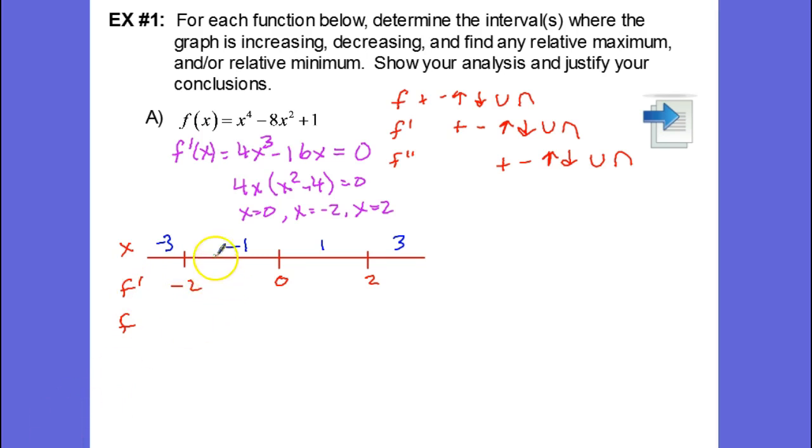So when we substitute negative 3 into f prime of x, we get a negative derivative. We get a negative f prime. When we plug in negative 1, we get a positive. Positive 1 gives us a negative derivative, and positive 3 gives us a positive derivative. So all we're doing is looking at the signs of the values that we get when we substitute our test numbers into f prime of x.